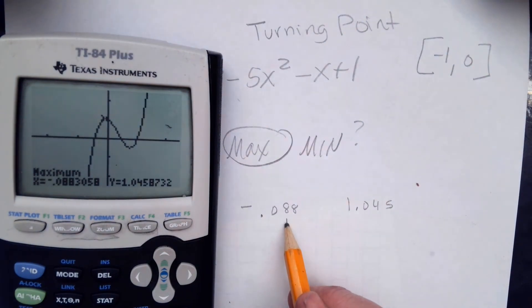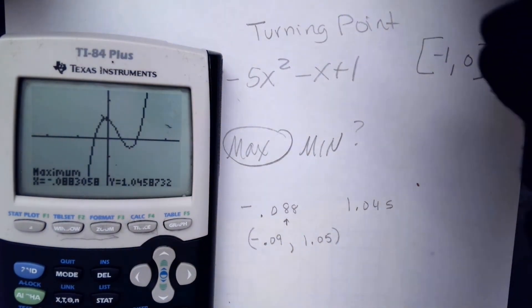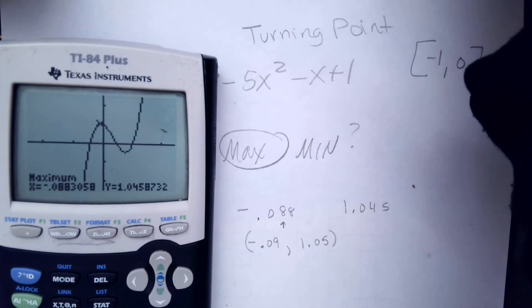So the hundredths place is right there. So this is negative 0.09. And this is 1.05. That's what I would do to use the calculator to find the turning point.